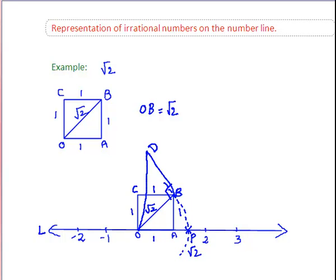Now, join OD. BD equal to 1, and OB equal to root 2. By applying Pythagoras theorem to the right-angled triangle OBD, we get OD is equal to root 3.